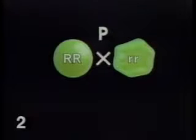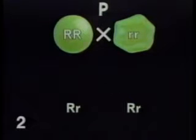The allele for round is here called capital R, and the allele for wrinkled is small r. The parental generation, P1, is purebred, meaning that both its alleles are identical. The sex cell, or gamete, contains each allele only once. During fertilization, the gametes fuse into one another.